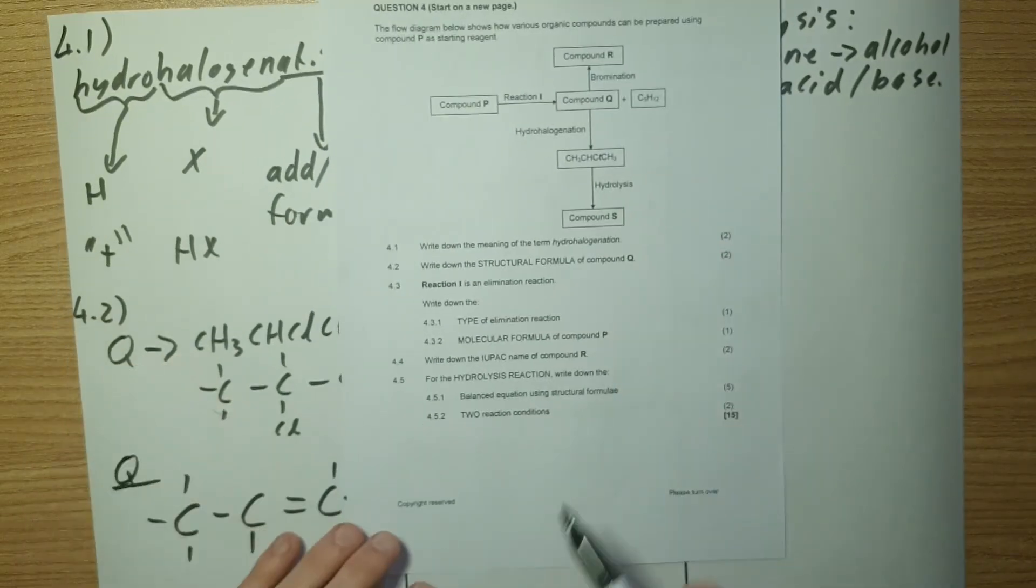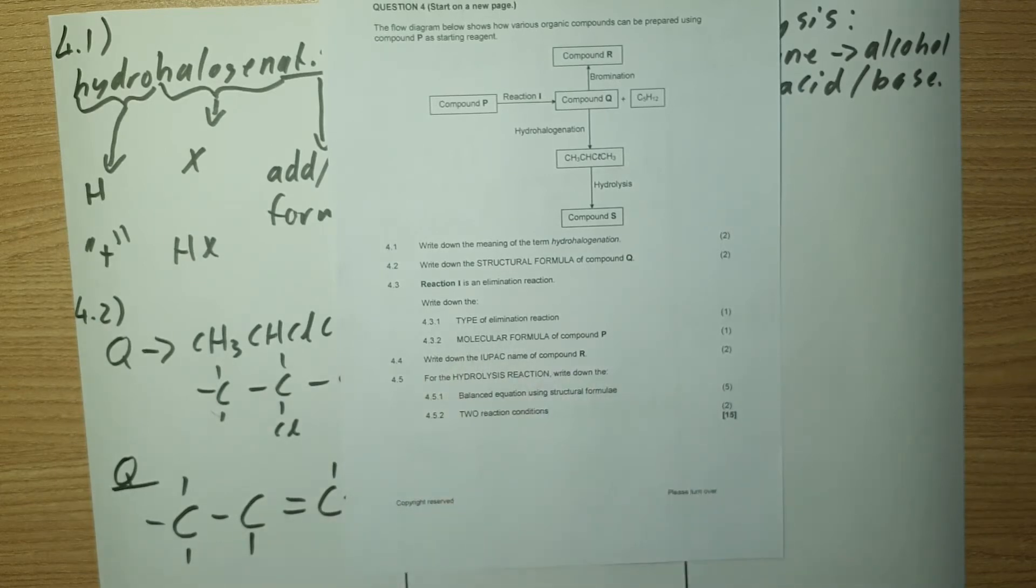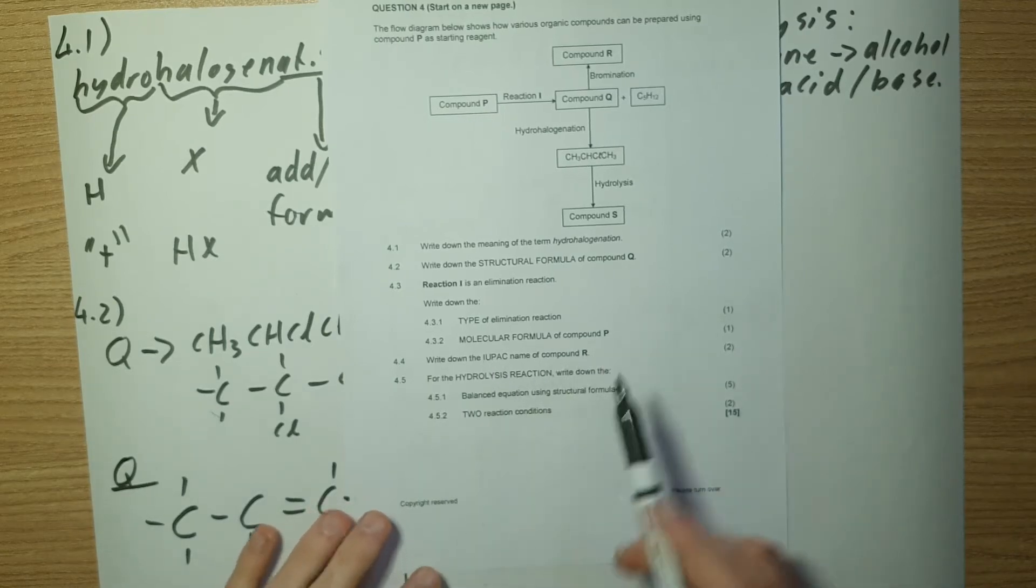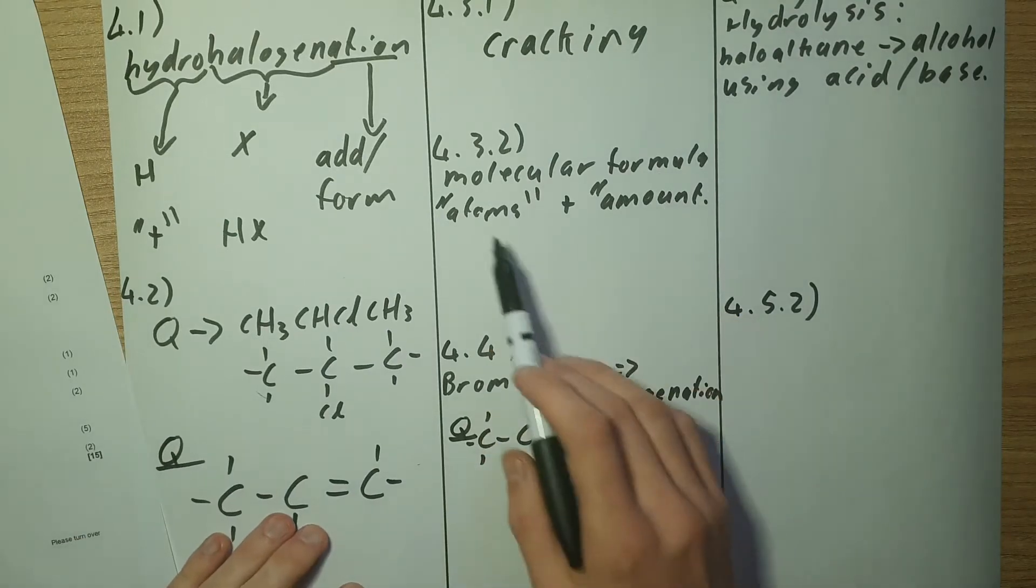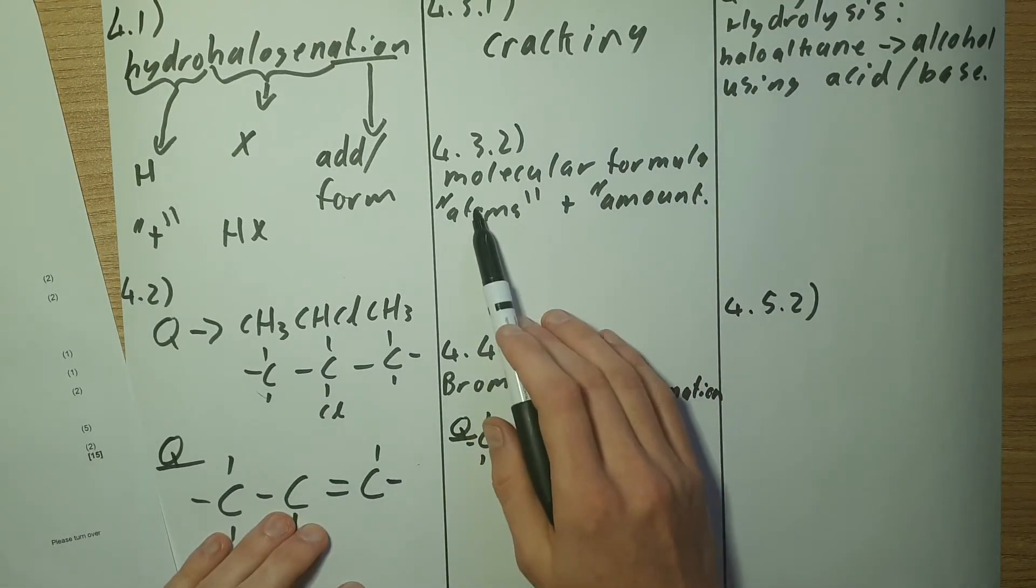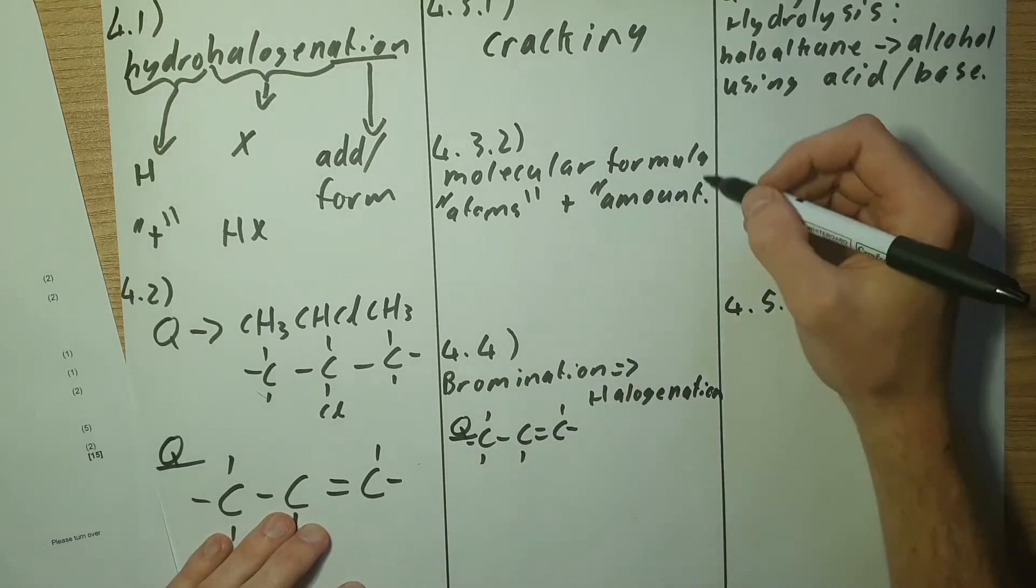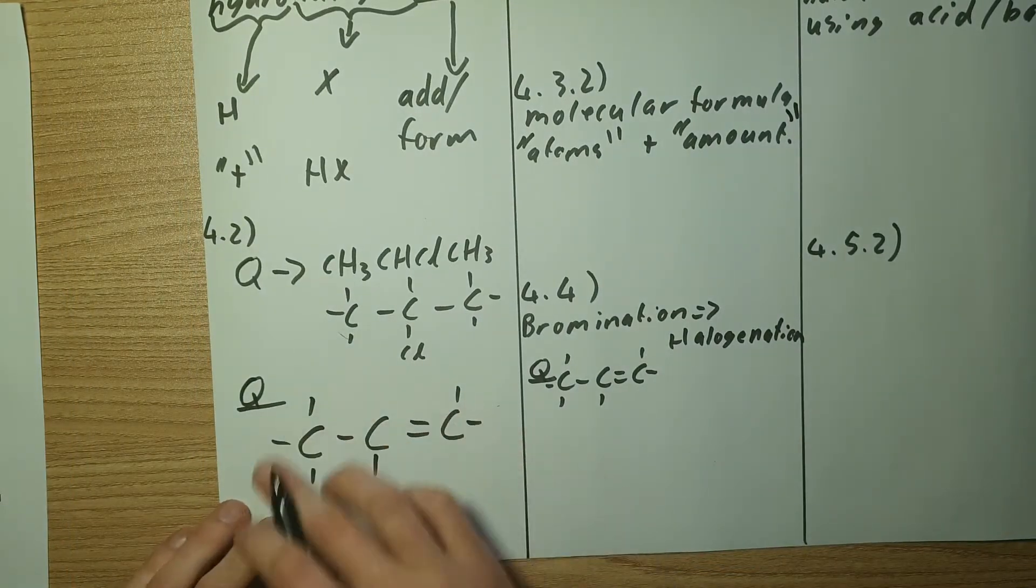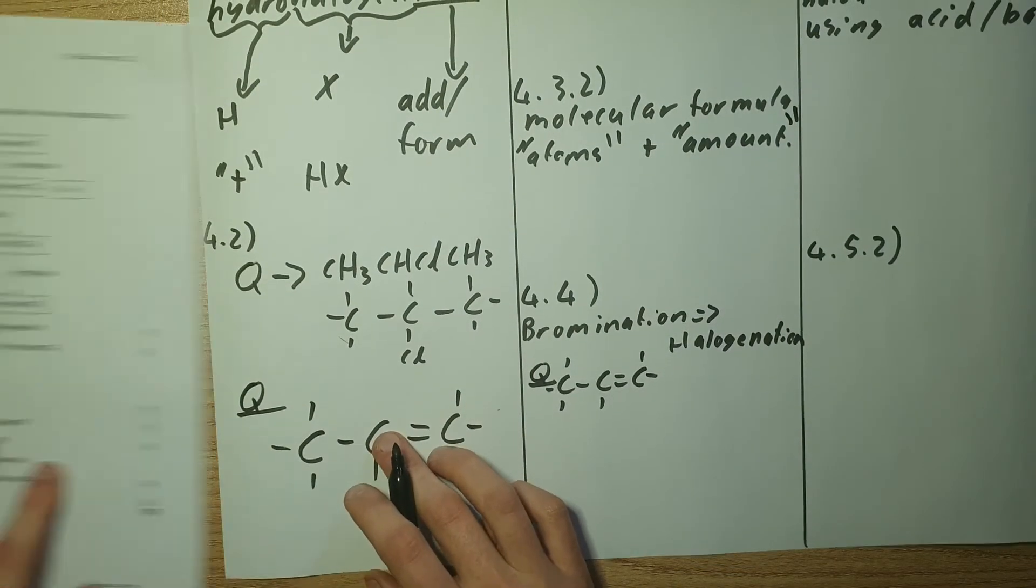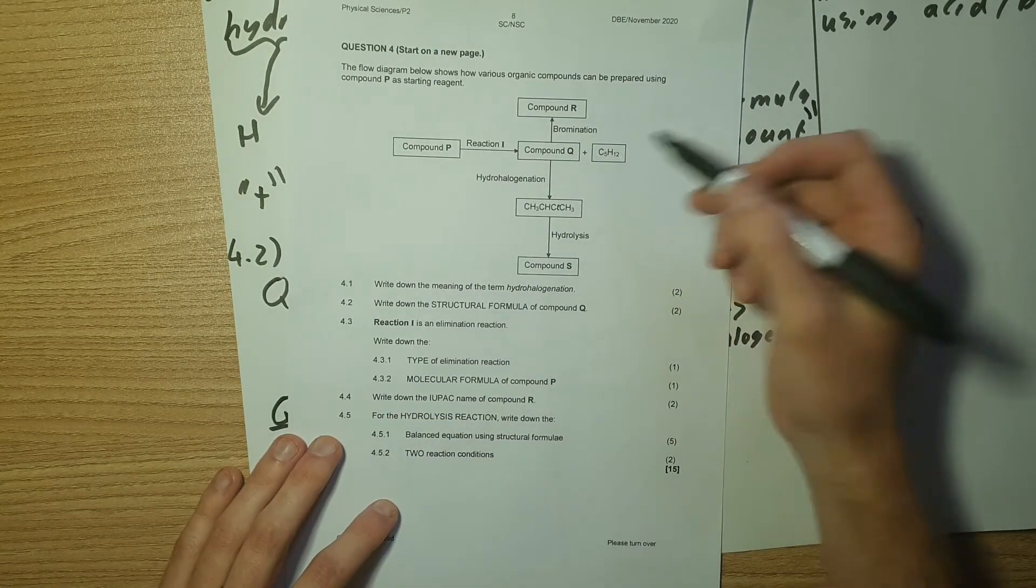Now 4.3.1 says write down the elimination reaction, we've done that. 4.3.2 says the molecular formula of compound P. So molecular formula you should be thinking of atoms, which atoms are involved and the amount of each atom. That's quite simple. From Q we have three carbons and six hydrogens and then from the compound next to it we have five carbons and 12 hydrogens.